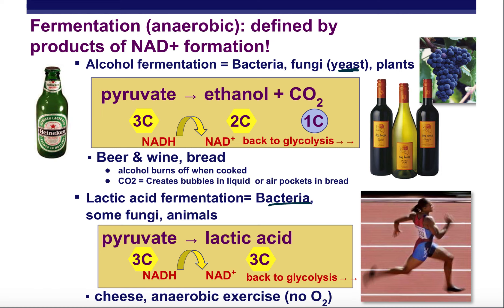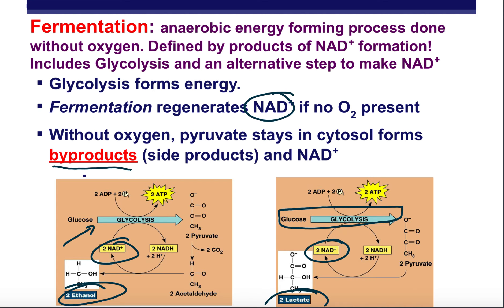For us humans, we feel fermentation as the lactic acid burn during intense exercise. That burn tells you to slow down so the body can get enough oxygen to make energy the healthy aerobic way that doesn't produce lactic acid. Fermentation is really about regenerating NAD+ when we don't have oxygen, so at least we can get some energy from glucose — even though it's not nearly as good as cellular respiration with oxygen, which allows glycolysis products to move through stage 2 and stage 3.